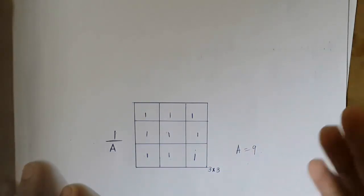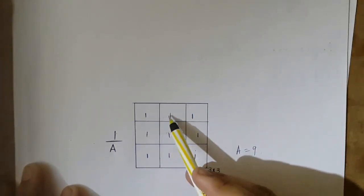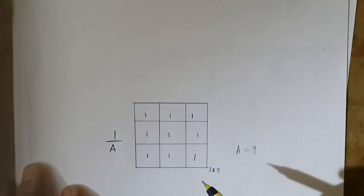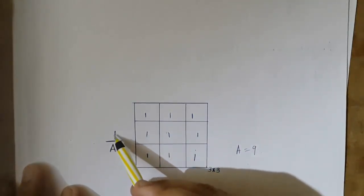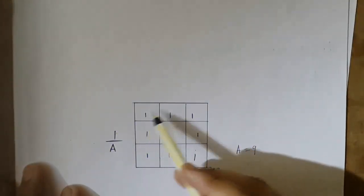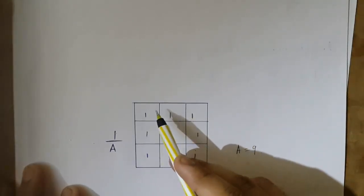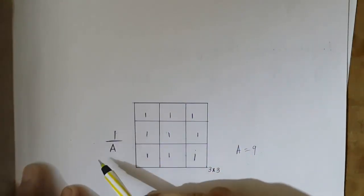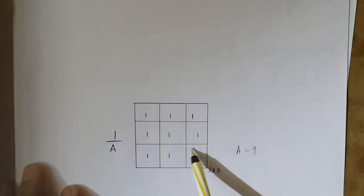Each mask has elements with values such that the output we get is in accordance to our requirement. This one has each element value as 1. This is a low pass filter mask of dimension 3 by 3. Now 1 upon a is the scaling factor which accompanies each mask.